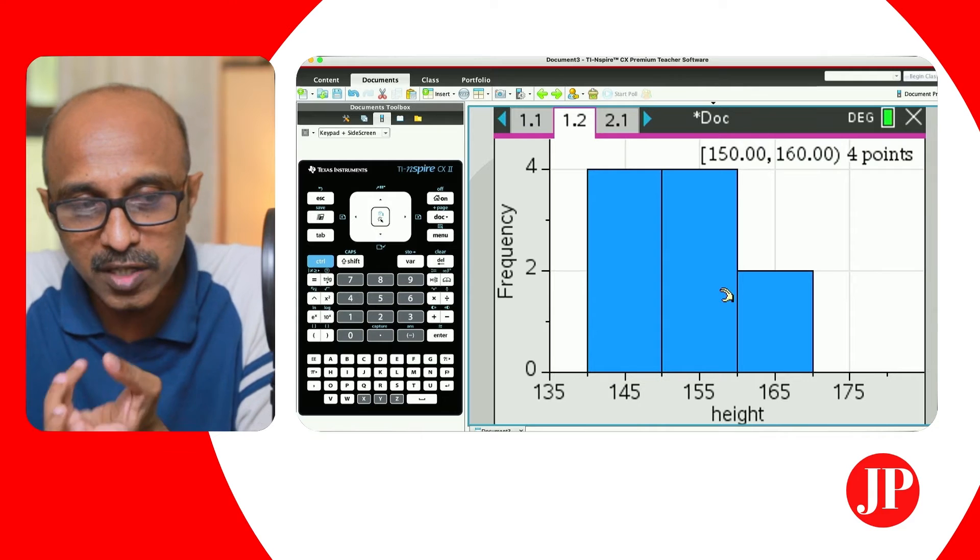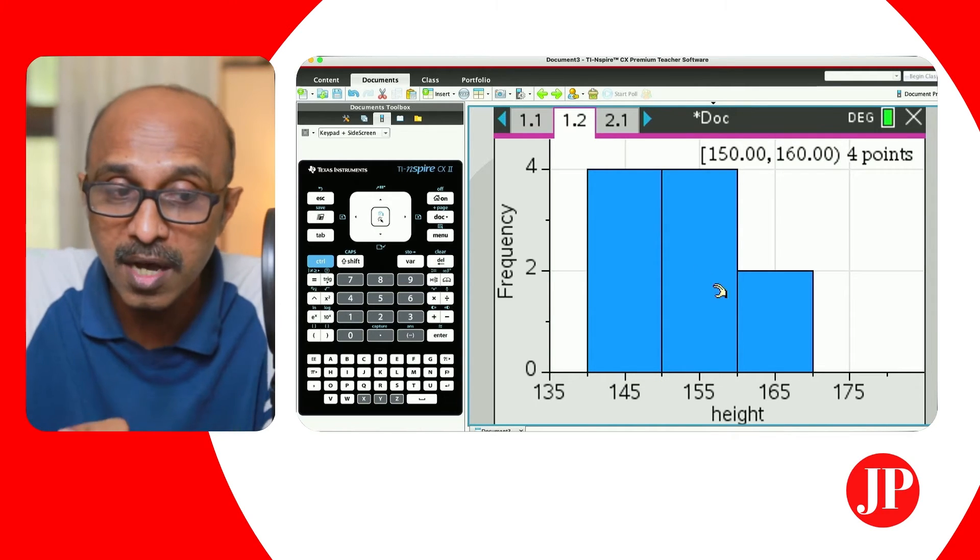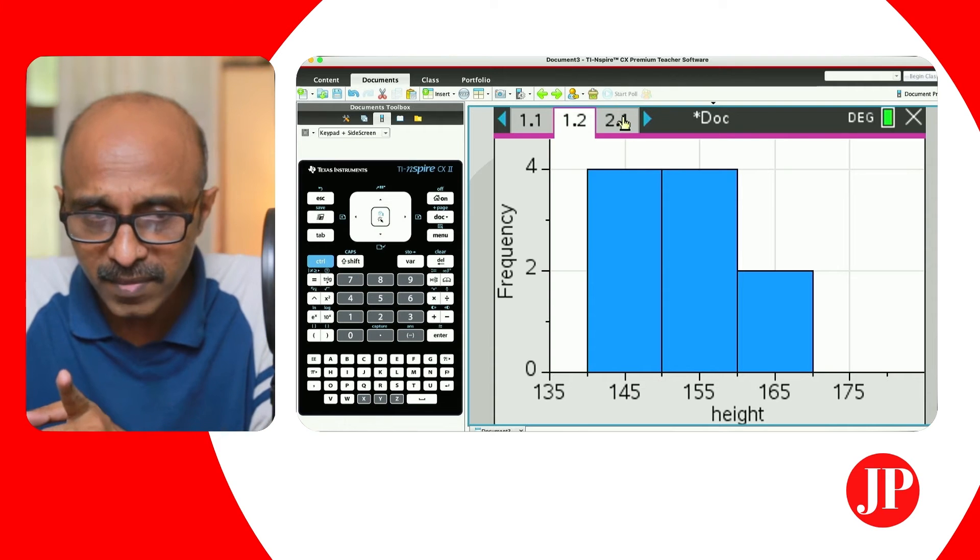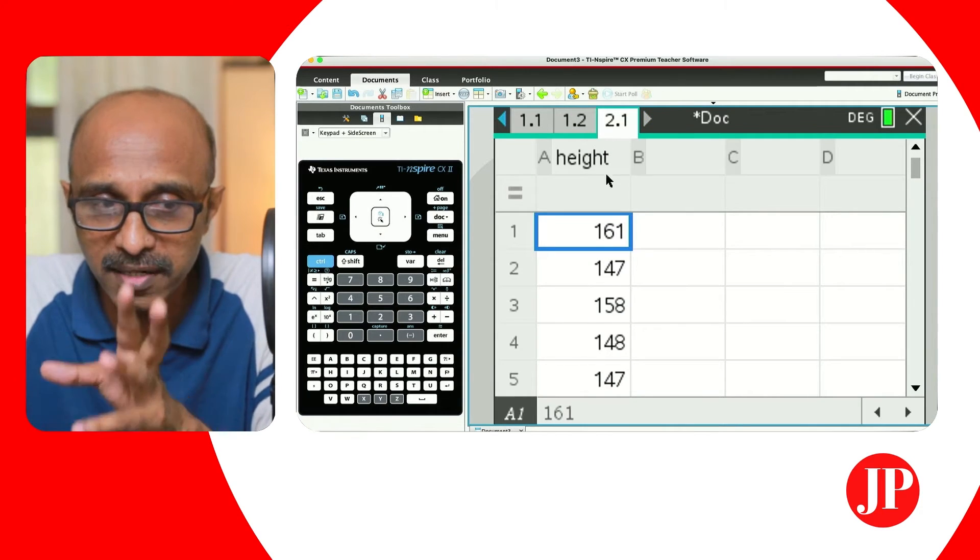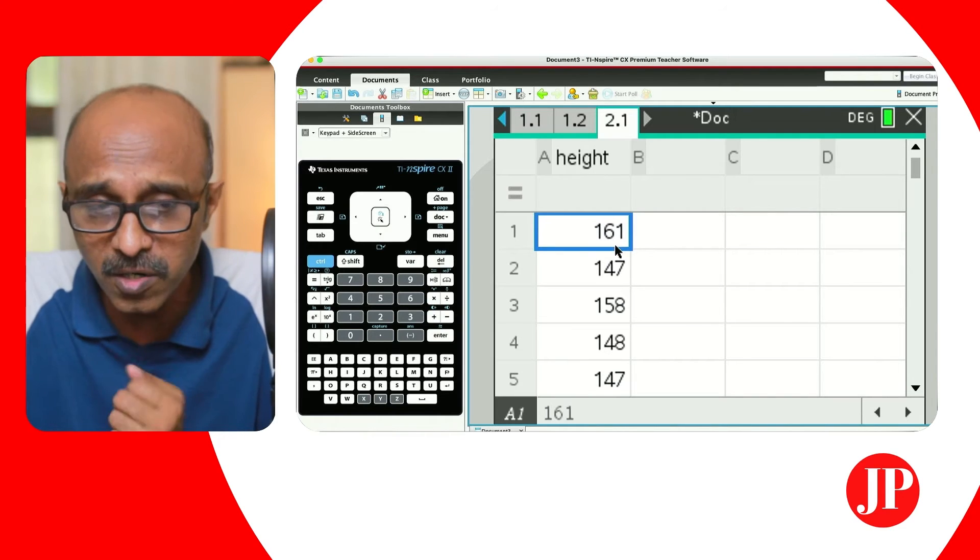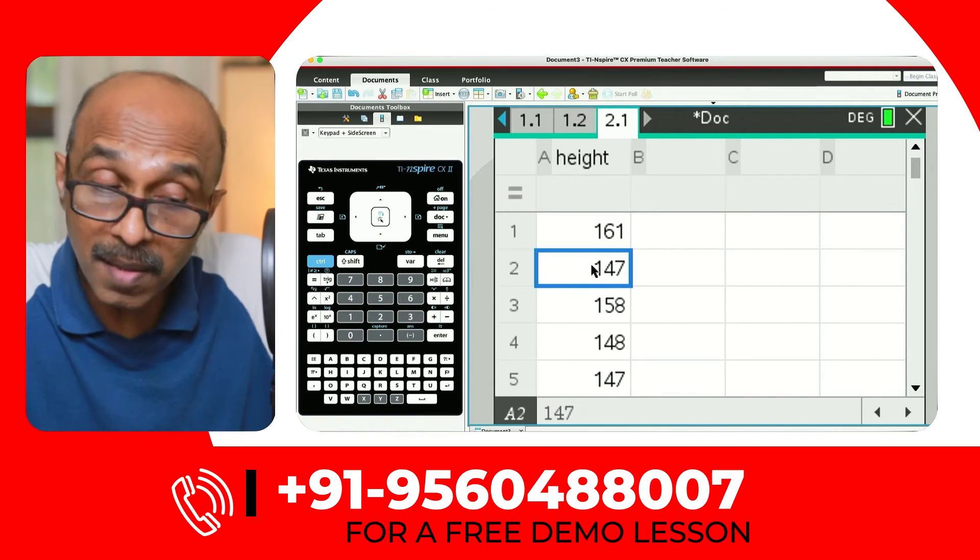So this is how the calculator will generate a histogram if we did not go via the summary plot route. Remember I said, we're just going to add a data statistics page, but if you wanted to do the same thing using a summary plot. And so I have already entered the data on a different problem, a new problem, the same set of data. I've just copied it out here.